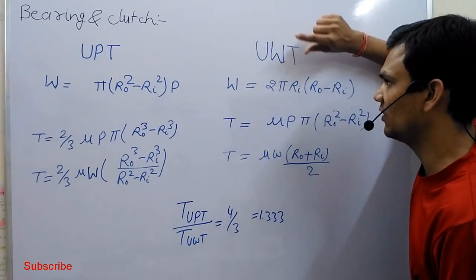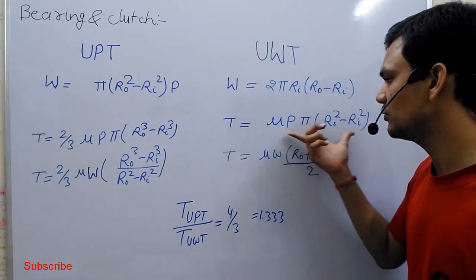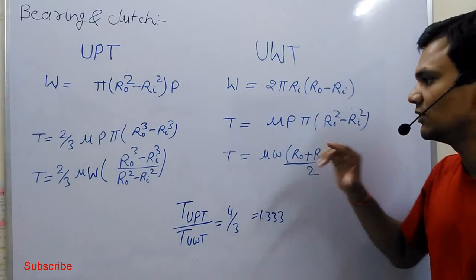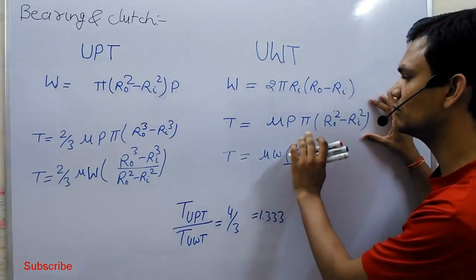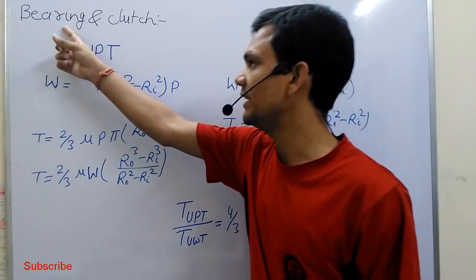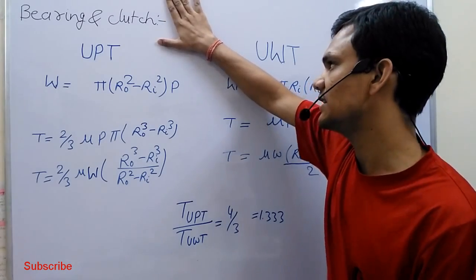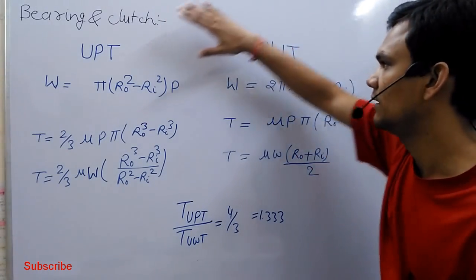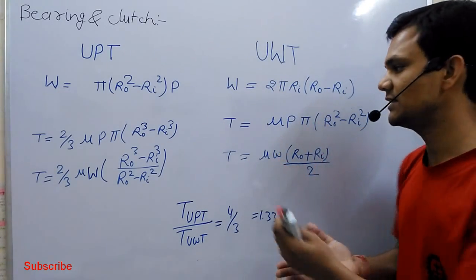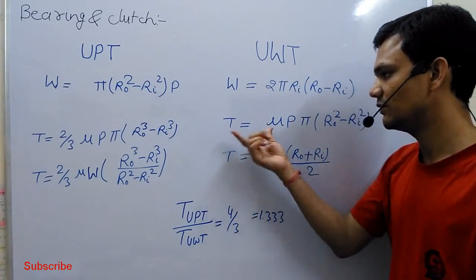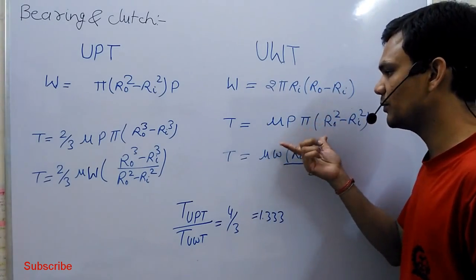If we prefer uniform wear theory, then in that case the torque will be less, so power losses will be less. The bearing is designed by uniform pressure theory, while the clutch is generally designed by uniform wear theory. Because in the worst condition for the clutch, the torque is less, so friction will be less in the case of uniform wear theory.